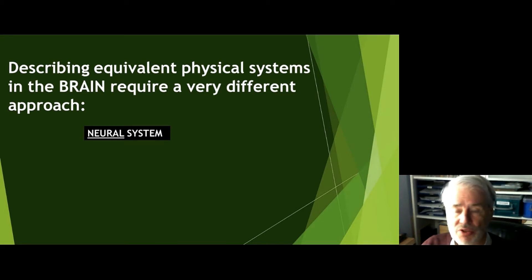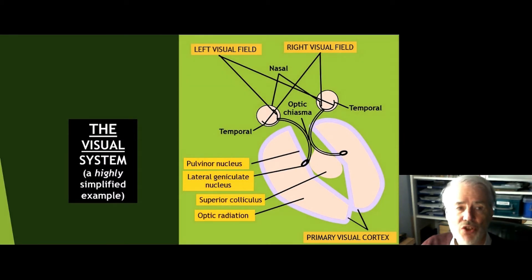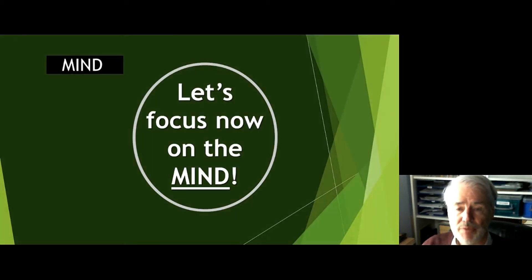Describing the equivalent physical systems in the brain require a very different approach. When you're talking about a neural system, you have to talk about different locations in the brain, different pathways, different units, and different types of operation. So it's a very different kettle of fish. This is an extraordinarily simplified picture of just the visual system. Since there are many cognitive systems whereby we gain a special kind of knowledge, in this case visual cognition, you can imagine that multiplying these on one screen would be extremely difficult.